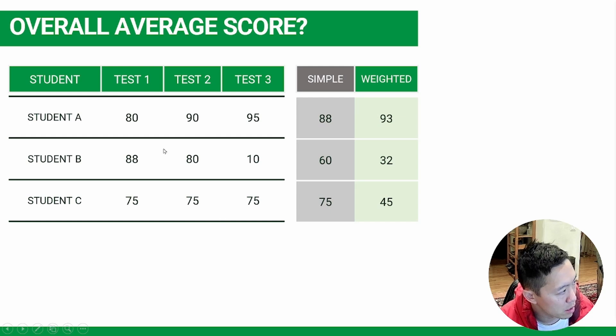So, wrapping it all up, if you were to look at all three students, all three tests, if you look at the simple average of, say, student B, the simple average would give him a score of 60 for the whole school period. But if you looked at the weighted average, his score would actually be much lower, a 32.